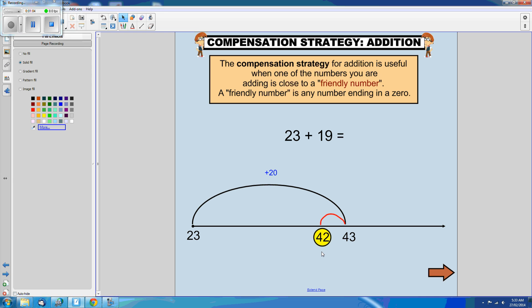go back one, which means my answer is 42. 23 plus 19 is 42.